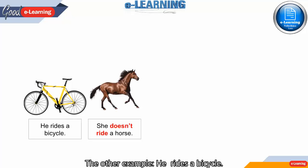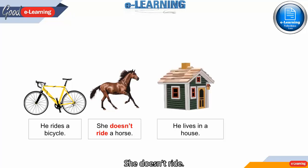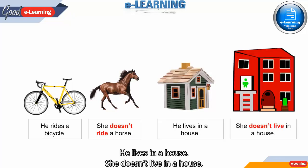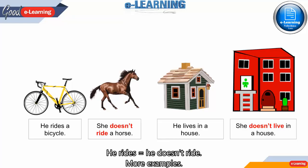She doesn't ride a horse. He rides a bicycle. She doesn't ride. He lives in a house. She doesn't live in a house. Do you see the difference? He rides — she doesn't ride.